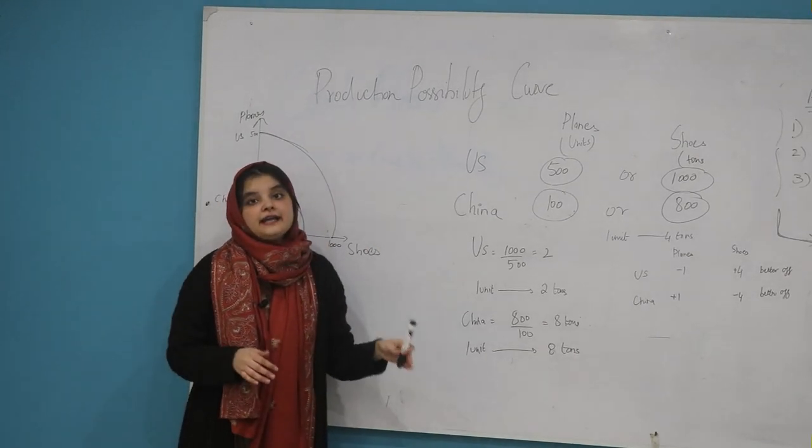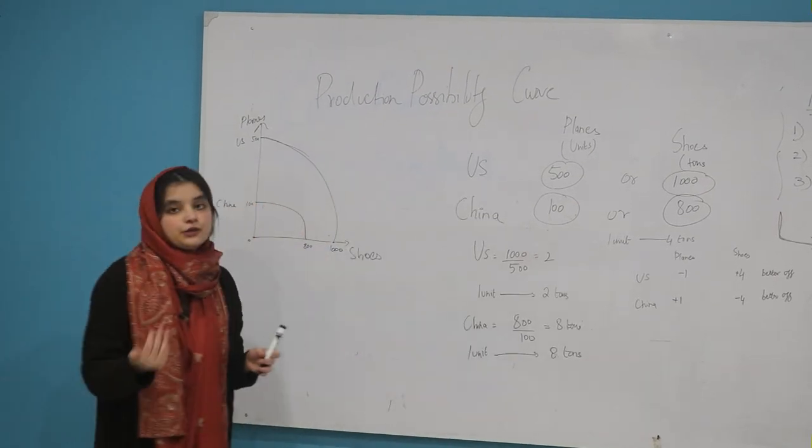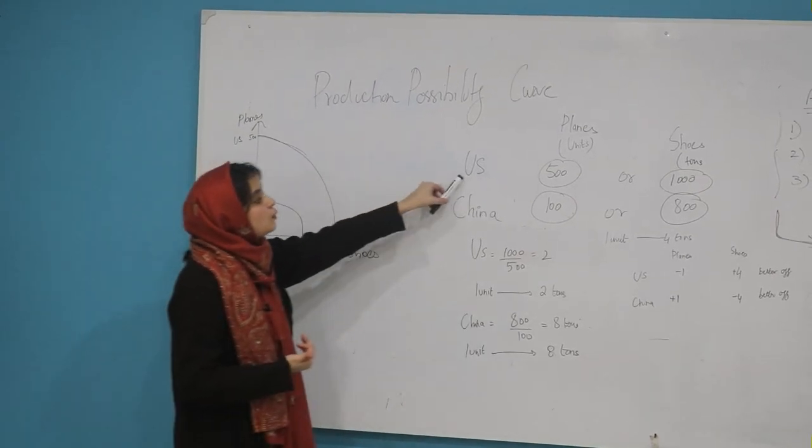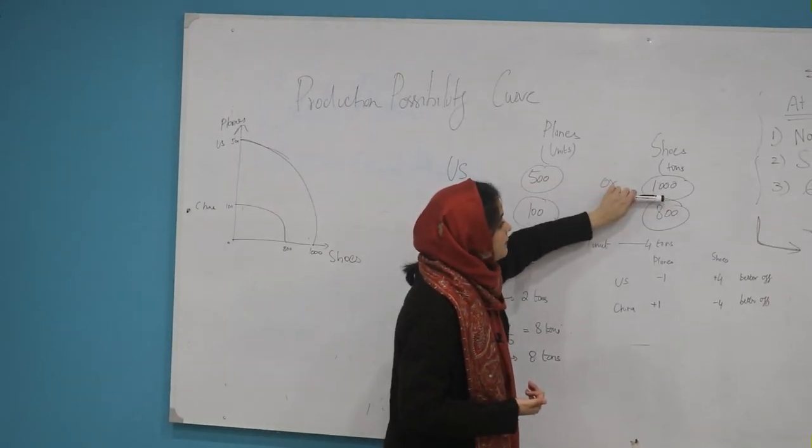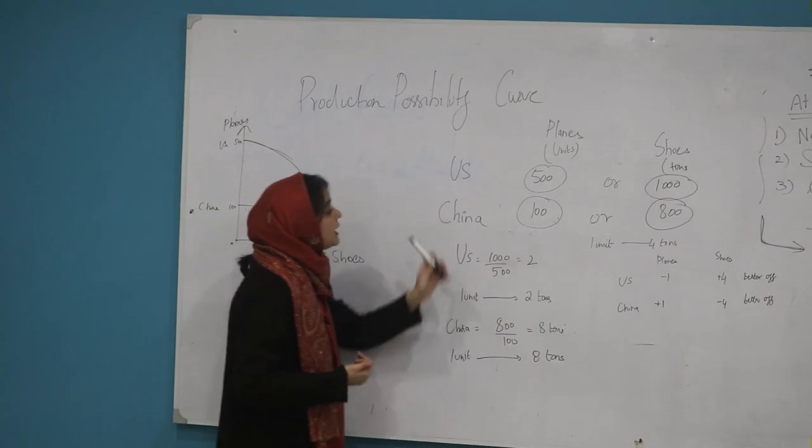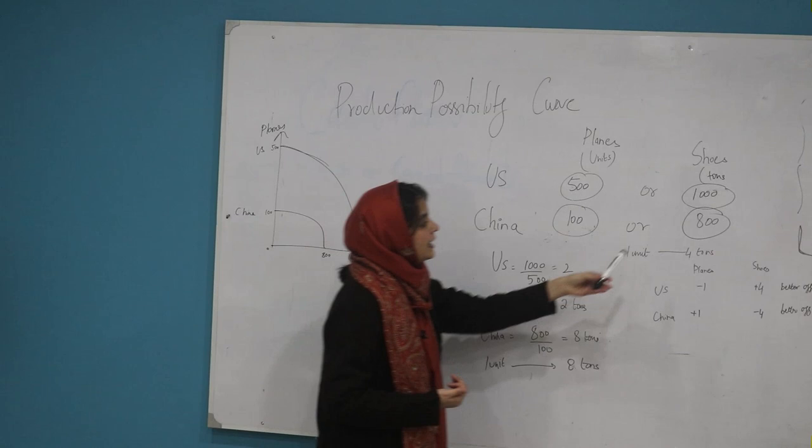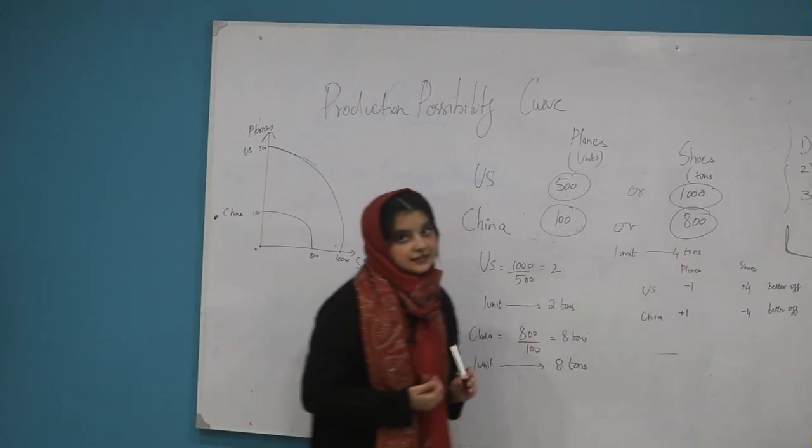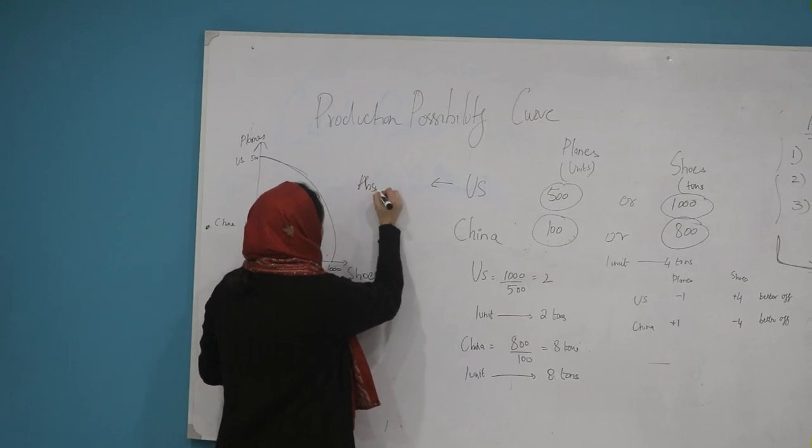Absolute advantage is that you produce anything at a greater level compared to its competitors. Here, the US has absolute advantage in both planes and shoes, because they can make more planes than China and more shoes. So the absolute advantage goes to the US.